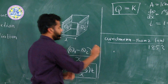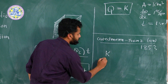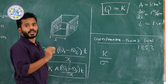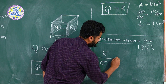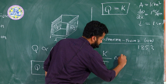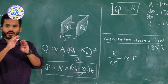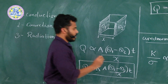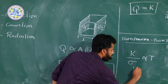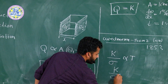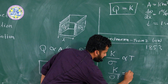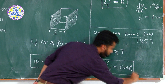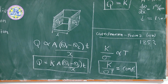The ratio of K — thermal conductivity — to sigma — electrical conductivity — of a material is proportional to absolute temperature T, and is the same for all metals at a particular temperature. This is also denoted as K divided by sigma T equals a constant. This is a famous law regarding electrical and thermal conduction.